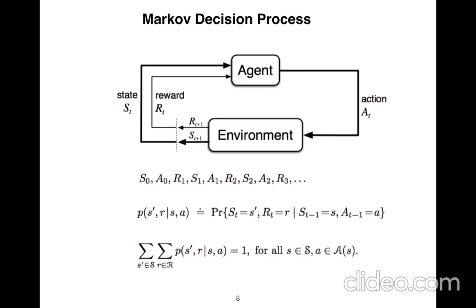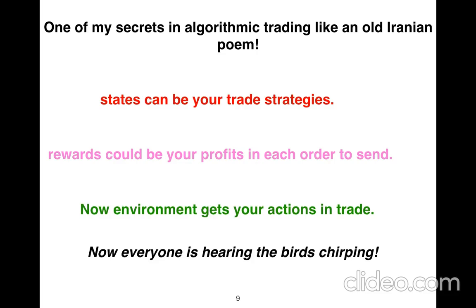Either your problem is a non-linear robot control or is about controlling the financial markets. I mean, different strategies when using algorithmic trading. So for me, I just look at the system, the environment in financial as a financial market. So our financial markets dictates what those probabilities should be discovered. So states could be your trading strategies. Reward could be your profits in each order to send.